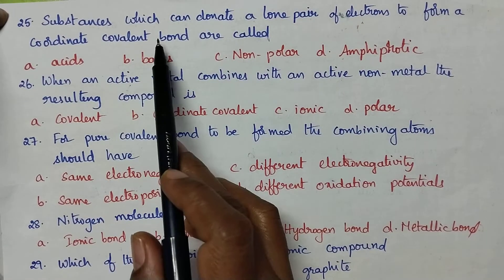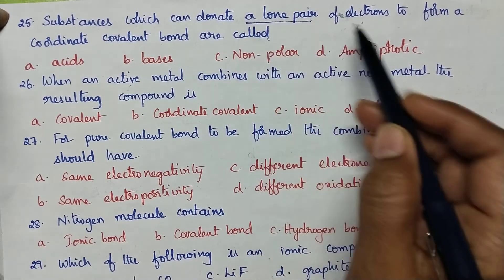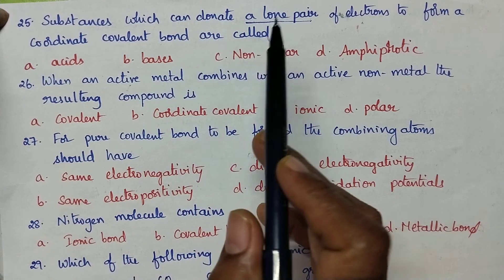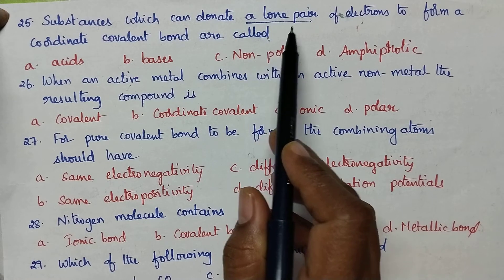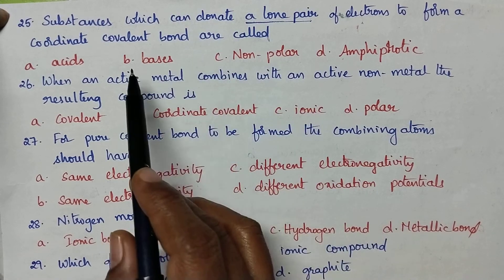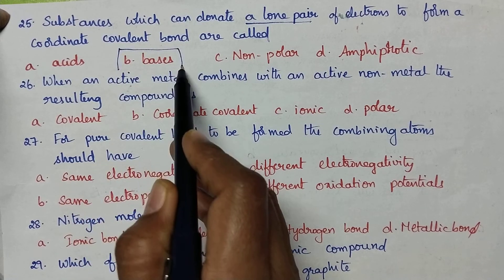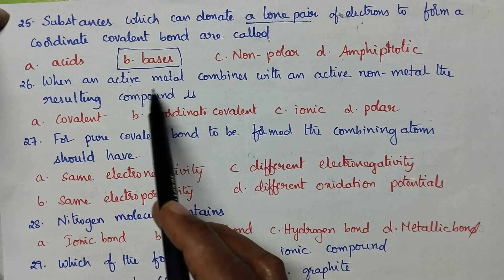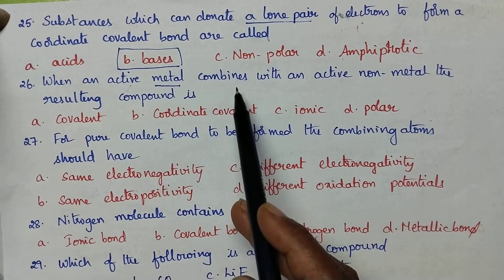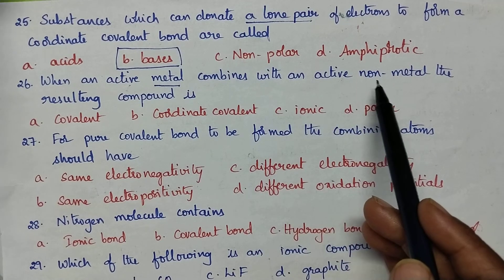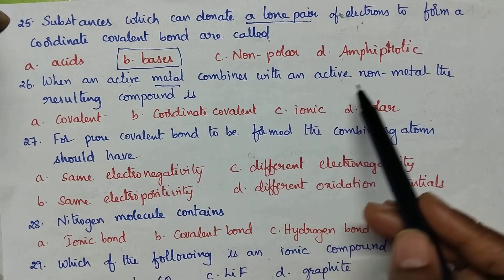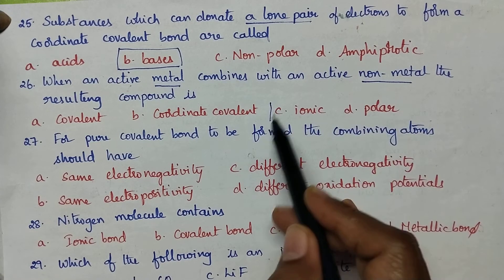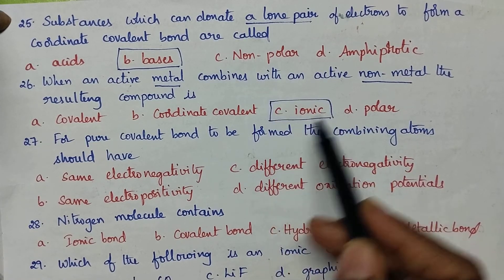Substances which can donate a pair of electrons to form a coordination covalent bond are called: an element capable of donating a lone pair of electrons is called a Lewis base. So option B — base — is the right answer. When an active metal combines with an active non-metal, the resulting compound is ionic — a bond between a metal and a non-metal results in the formation of an ionic bond.